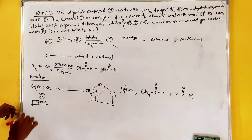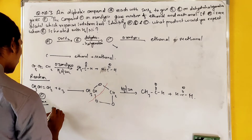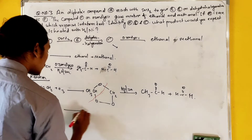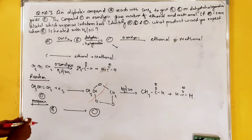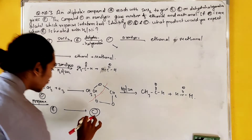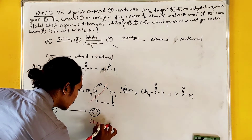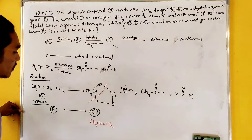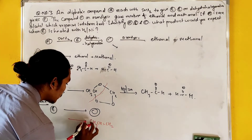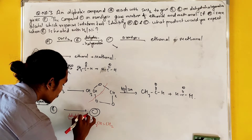We do dehydrohalogenation with compound B to get compound C, which is propene: CH3–CH=CH2. We do dehydrohalogenation.